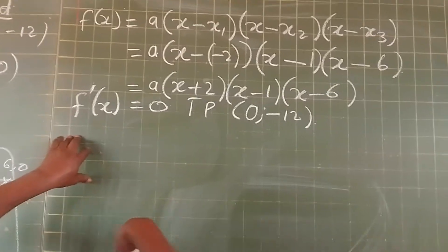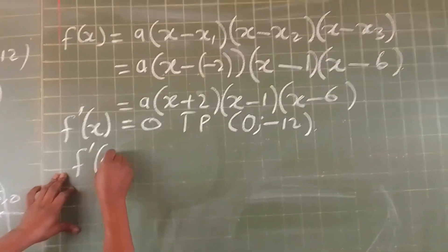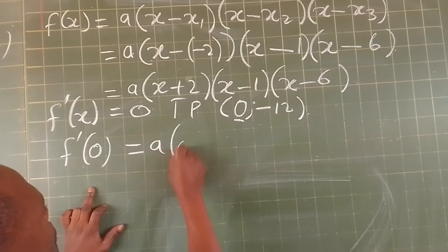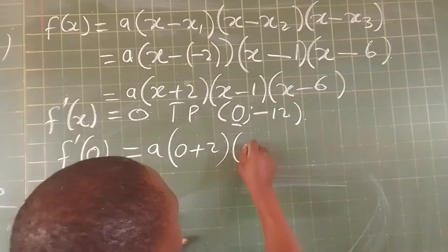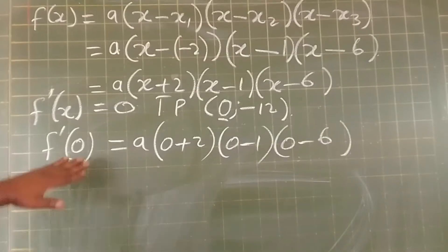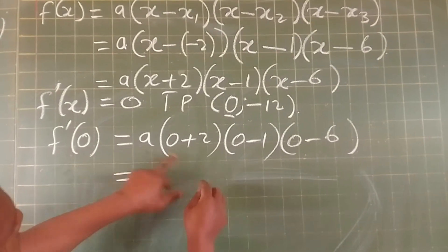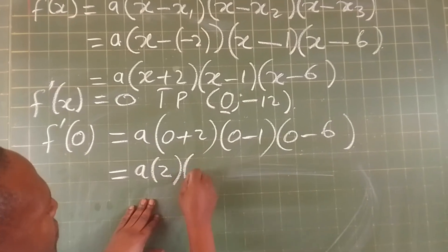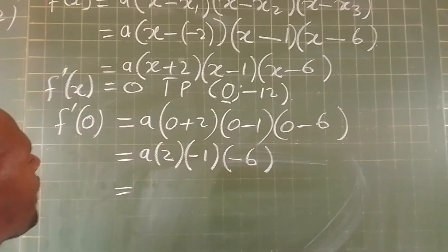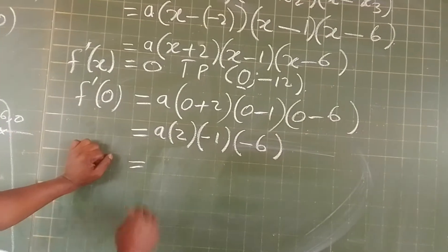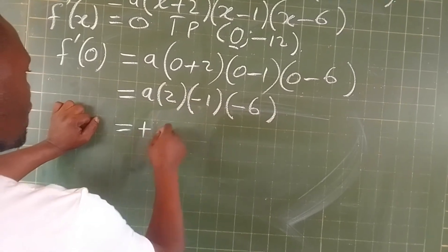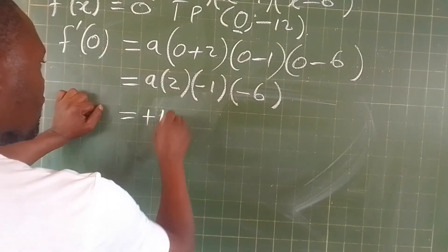Now, we know that x is zero. When we substitute zero here in the equation, we find a times (0 + 2)(0 - 1)(0 - 6), which is a times 2 times -1 times -6, which equals 12a.